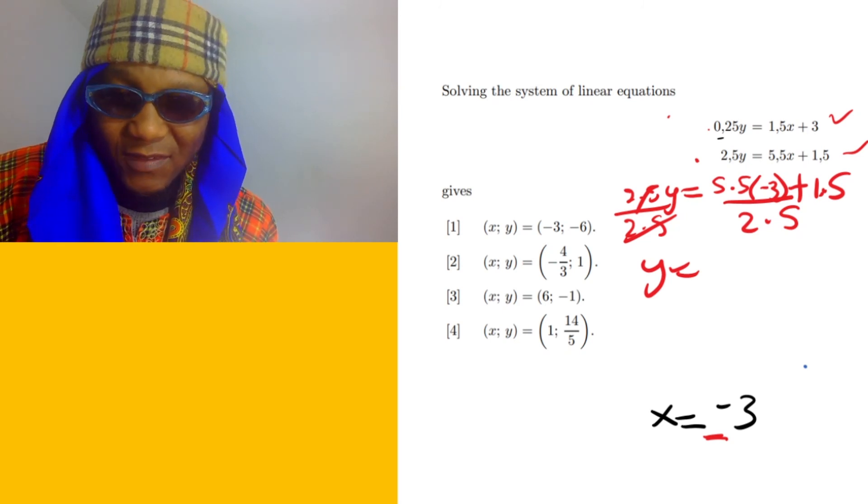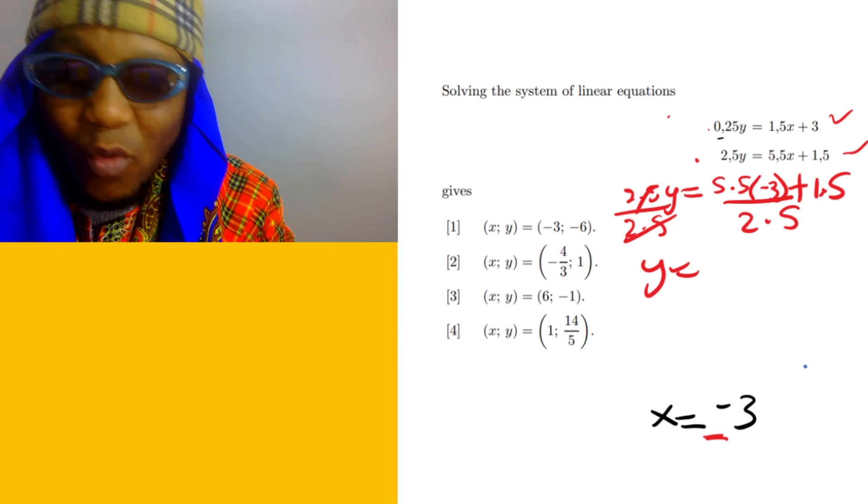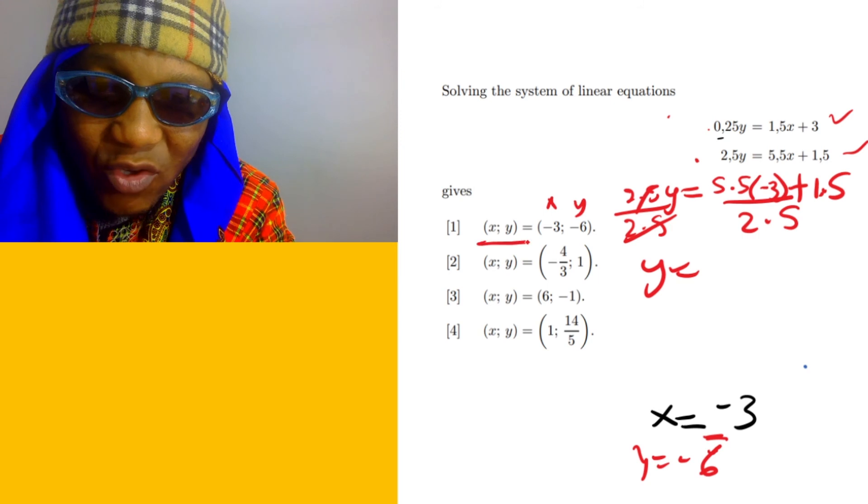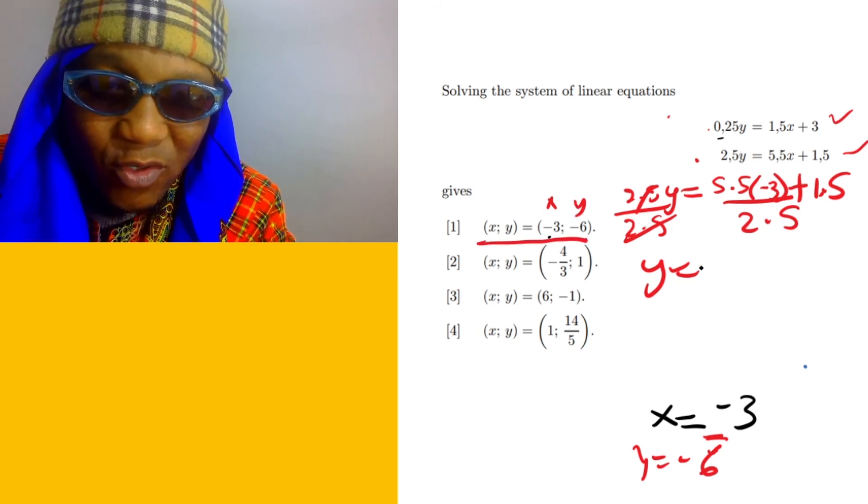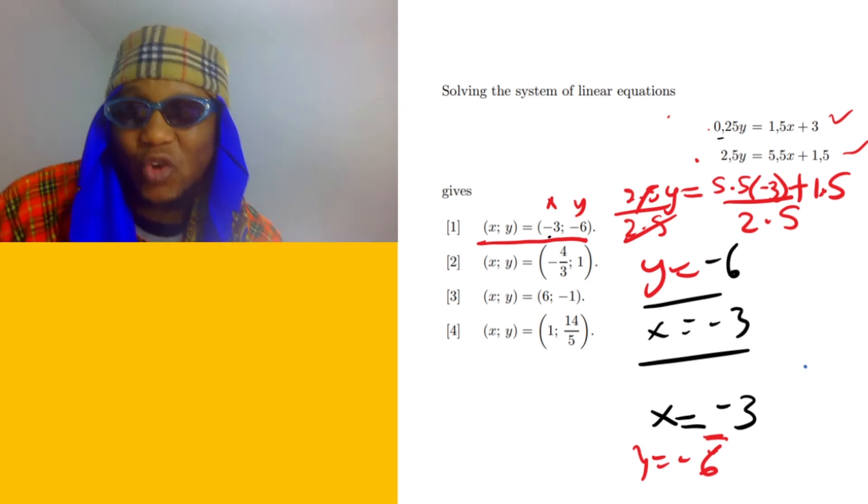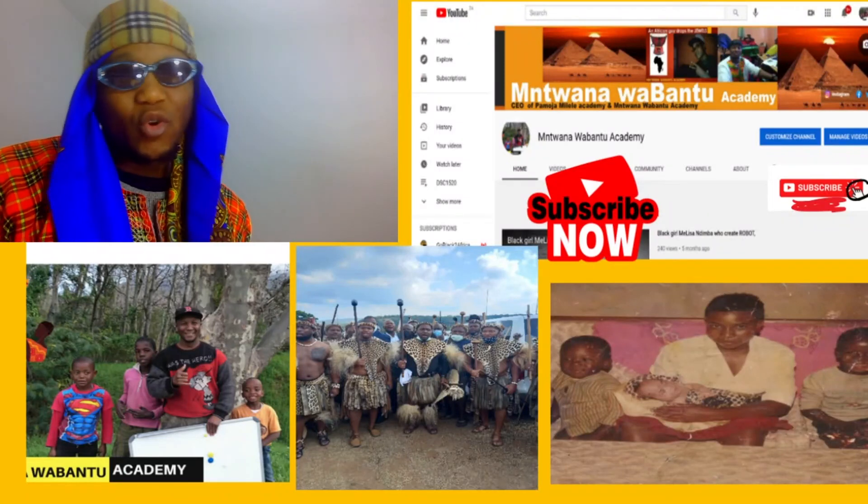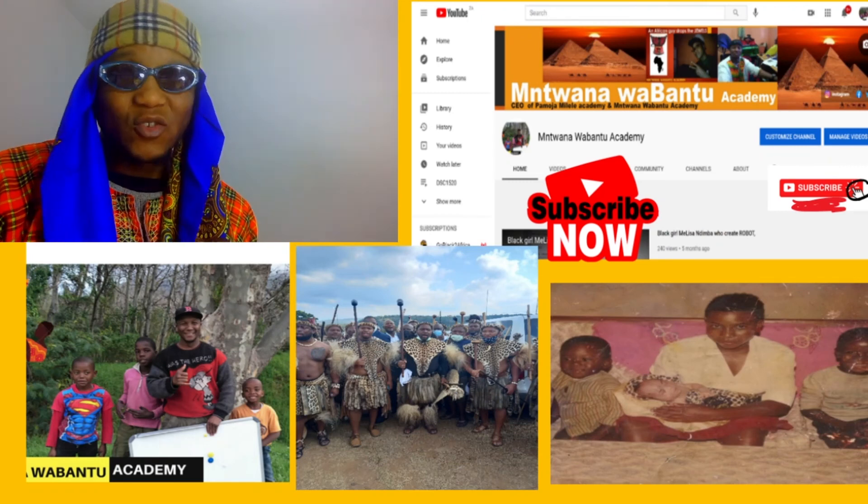Negative 6. So now we know the value of y equals negative 6. This is x and this is y, so this is going to be option one: x equals negative 3 and y equals negative 6.